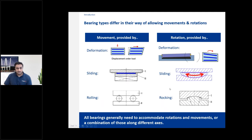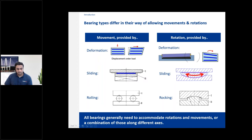Bearings accommodate their functions in different ways. In the top row, they provide movement and rotation by deformation — elastomeric bearings allow movement by shear deformation, while elastomeric pot or disc bearings allow rotation by differential compression. In the second row, movement is accommodated by sliding, and rotation by curved sliding. Older types like rocker and roller bearings accommodate movement by rolling, and rocker bearings rotate about a pivot point for unidirectional rotation.